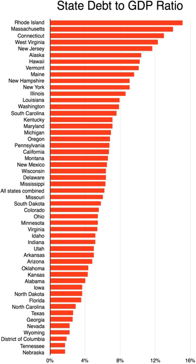Additionally, the member states of the United States do not possess international legal sovereignty, meaning that they are not recognized by other sovereign states such as France, Germany, or the United Kingdom. Nor do they possess full interdependent sovereignty — a term popularized by international relations professor Stephen D. Krasner — meaning that they cannot control movement of persons across state borders.